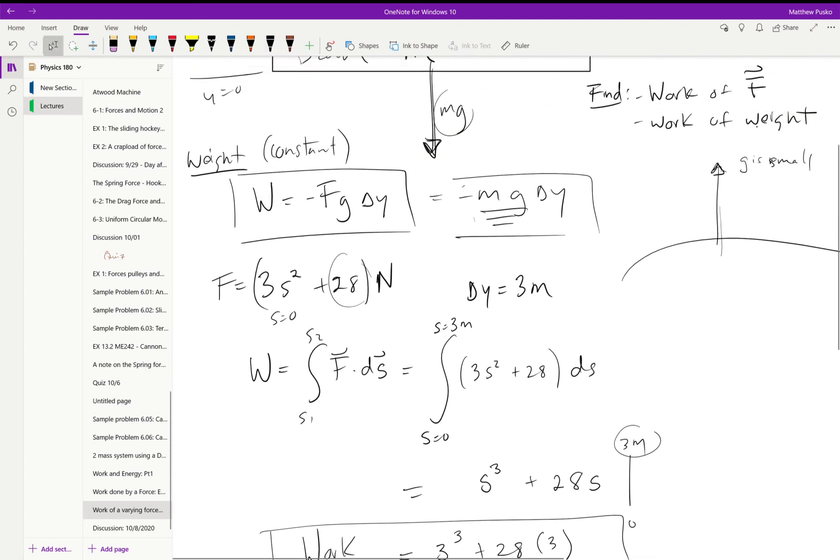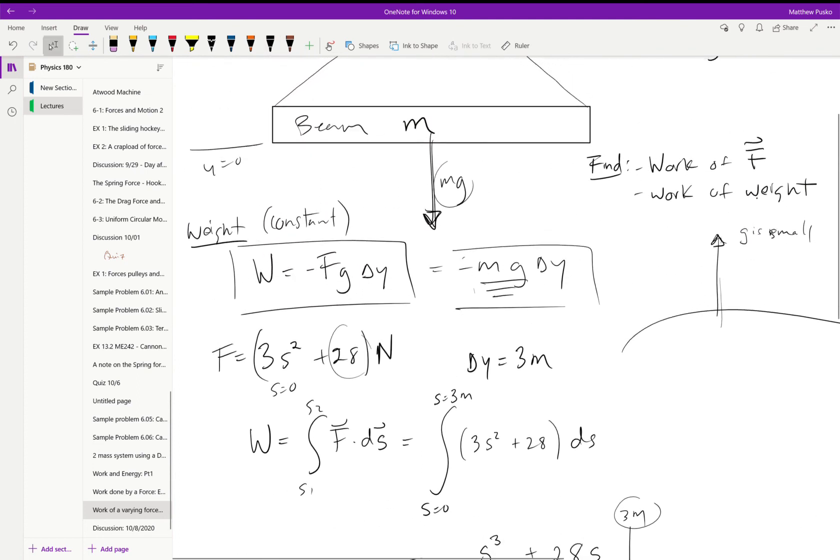The work that needed to be done to lift the beam would be the work done by the weight. So you'd have to counteract that the work. The weight is pointing downwards. You'd have to counteract that with the force pointing upwards and apply an equal or greater amount of work.